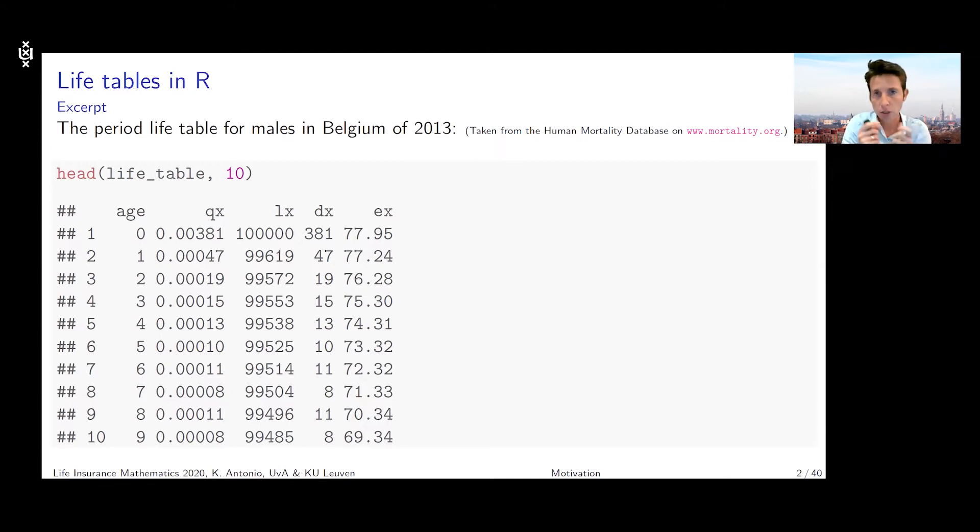Then we've got two new kids on the block: lx and dx. What is the meaning of lx, what is the meaning of dx, and how do they relate to qx, the mortality rates in this table?